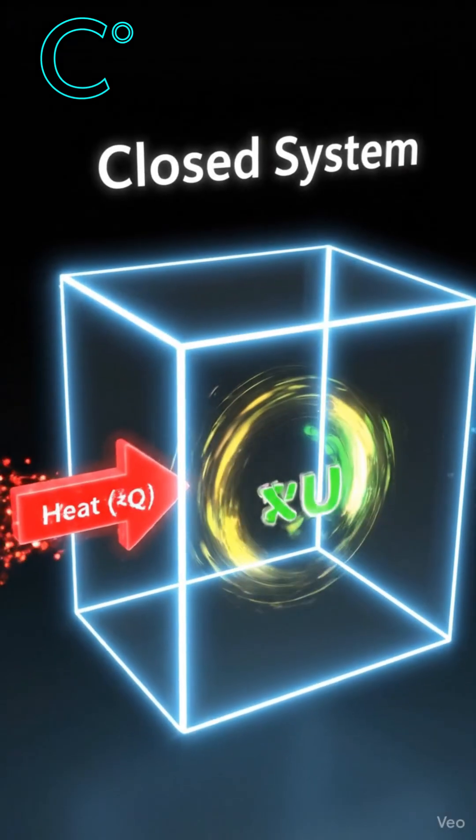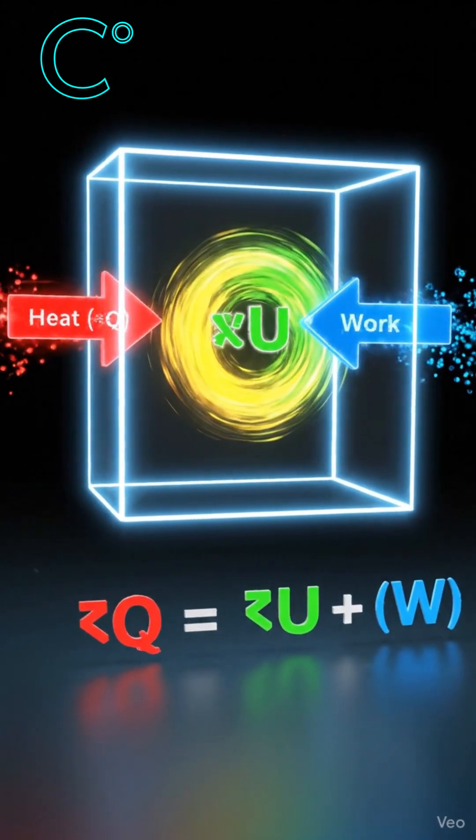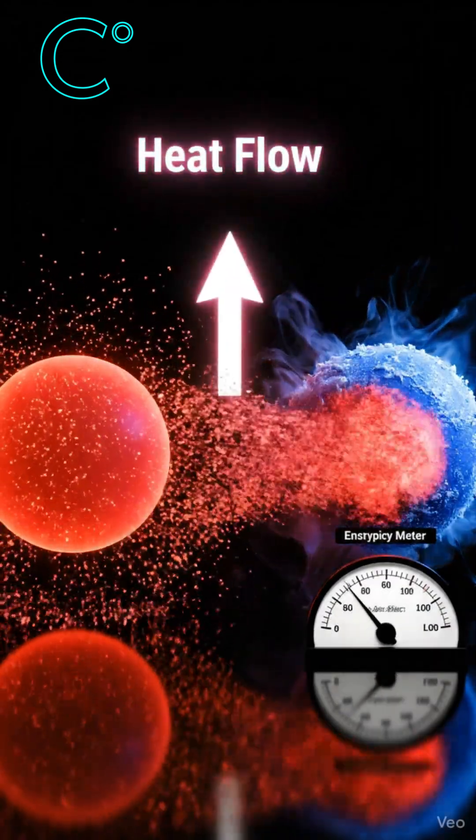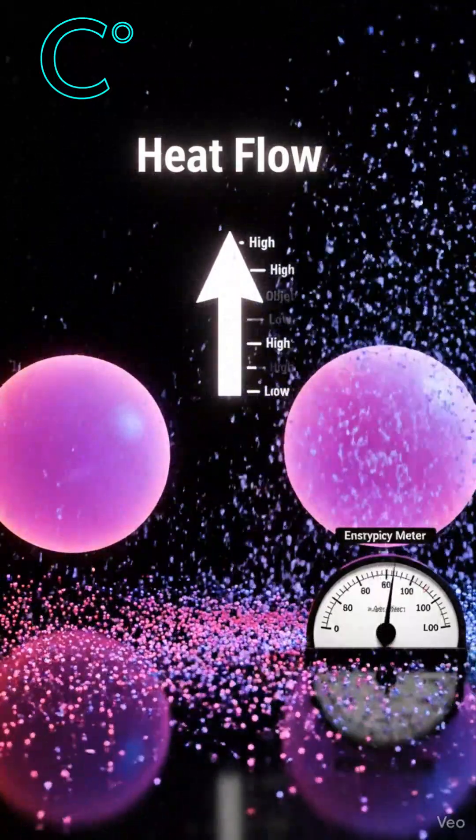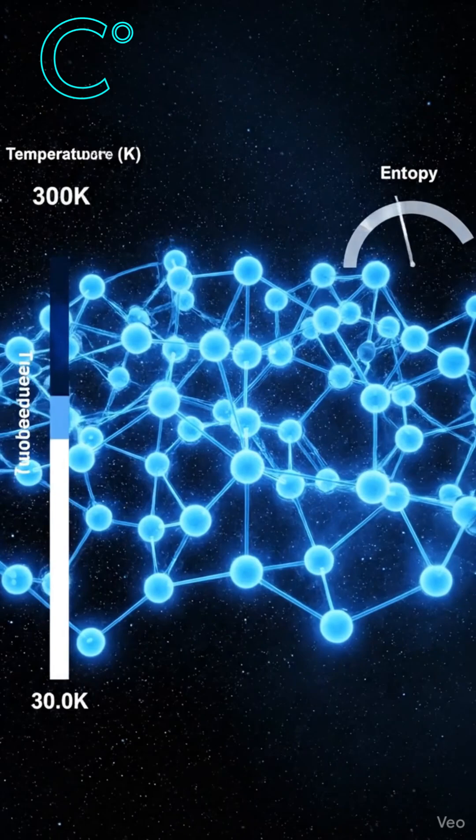Heat given to a system becomes internal energy or work. The second law of thermodynamics says heat always flows from hot to cold and never the reverse. It also introduces entropy, the measure of disorder, and the entropy of the universe always increases.